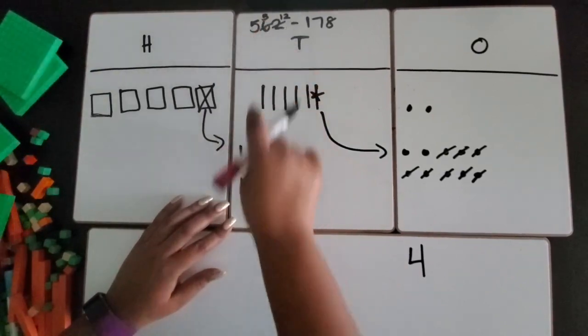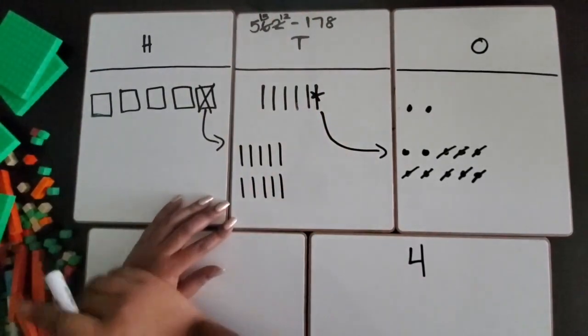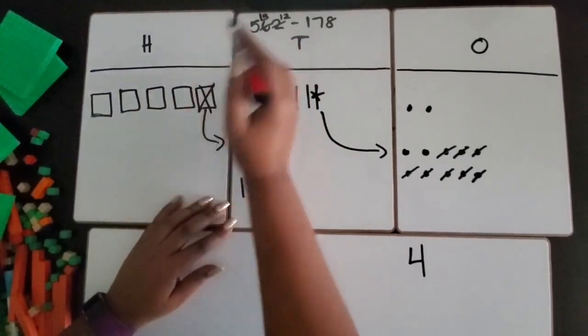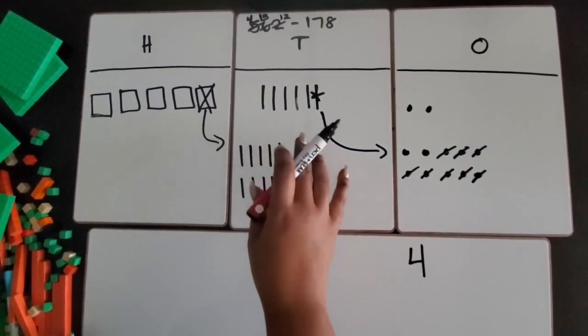So I have 5 tens. Now I have 15, so I'm going to show that up here. I have 5 hundreds. Now I have 4. I'm going to reflect that there.